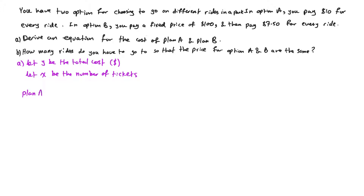For plan A, our cost is Y. If X is the number of tickets, then if Y equals X, one ticket means the cost is one — but it's actually $10. If you have two tickets, the cost is $20, because 10 plus 10 is 20. So we have to put 10 as our slope — $10 per ticket is our slope, or the rate of change. Every one ticket will cost $10, so Y equals 10X.